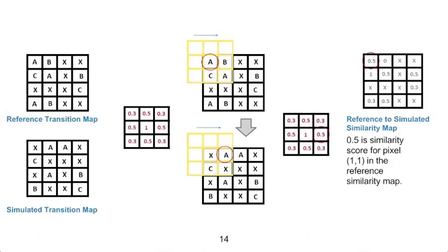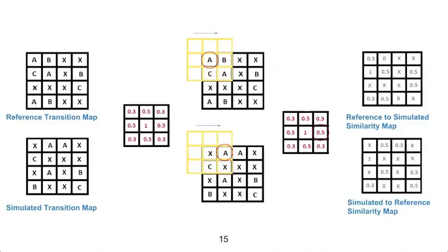We then perform the same calculation for every pixel in the reference transition map, which creates our first similarity map, shown here. We perform the same process in the other direction by having our window iterate over all pixels in the simulated transition map. This creates a second similarity map.